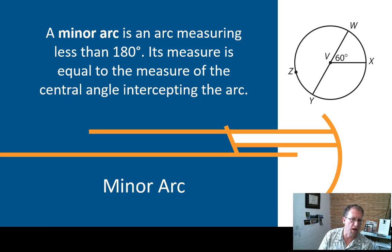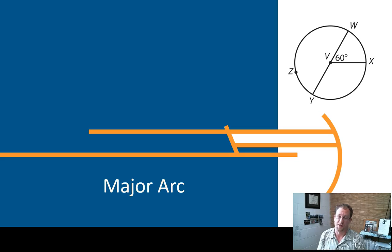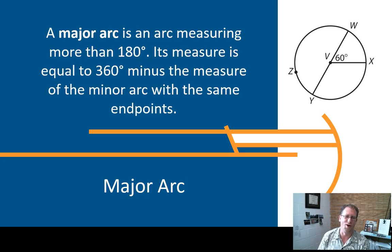There's a difference between a minor arc and a major arc. A minor arc is an arc measuring less than 180 degrees, and so arc WX here, less than 180 degrees, or arc XY, less than 180 degrees. A major arc is an arc measuring more than 180 degrees, and its measure is equal to 360 minus the measure of the minor arc with the same endpoints.